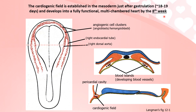In this diagram you can see the cardiac blood islands forming over here, with the mesoderm, the notochord, and the neuroectoderm also present.